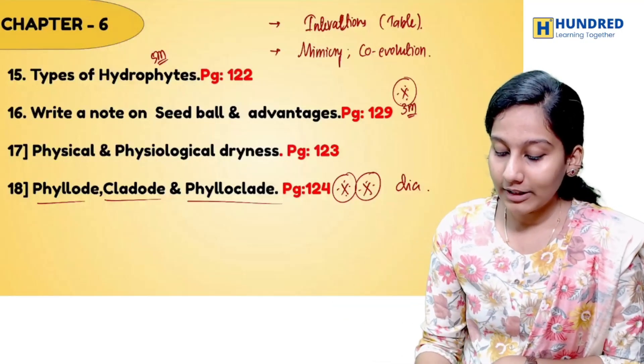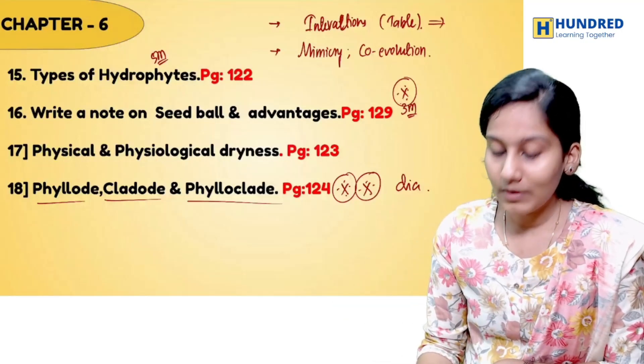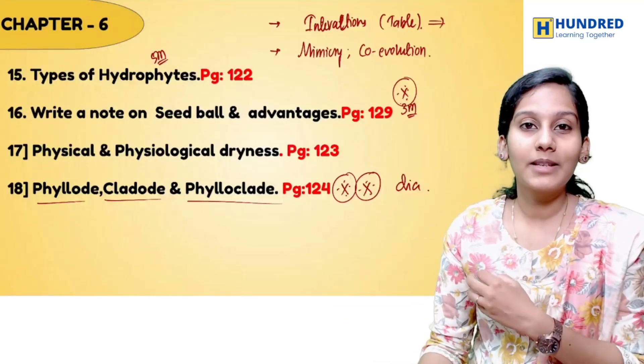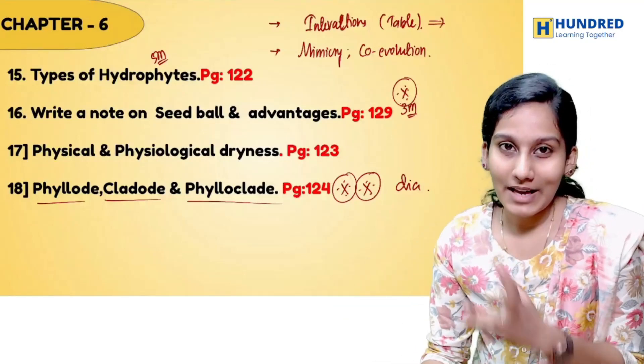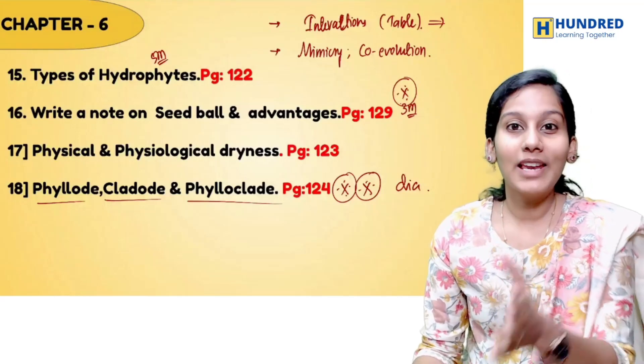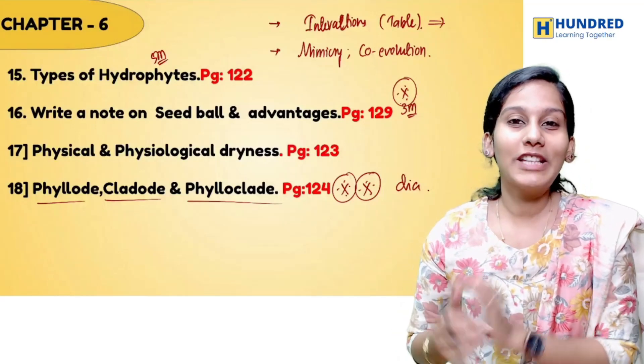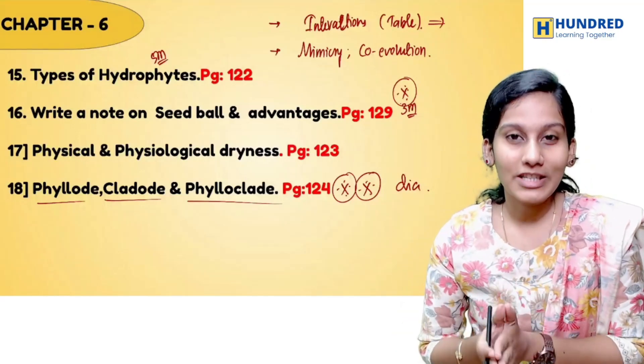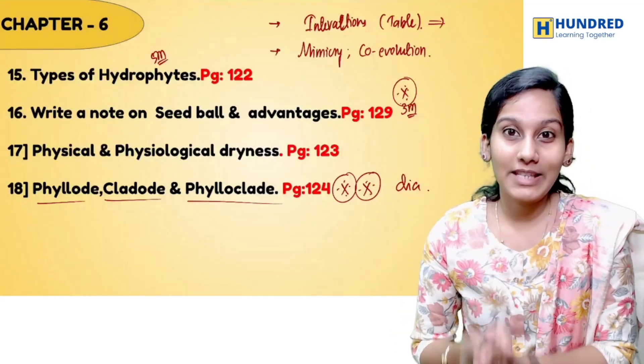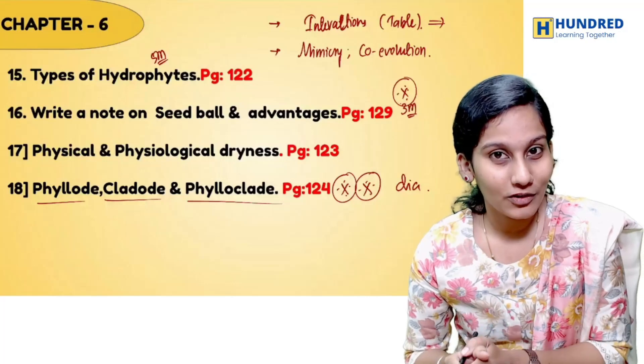All the interactions — mutualism, commensalism, parasitism — these are all the important questions in Chapter 6, Principles of Ecology.